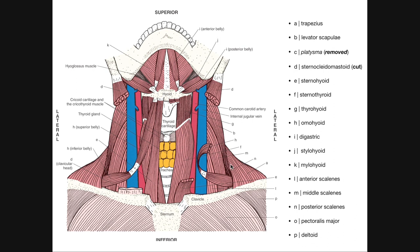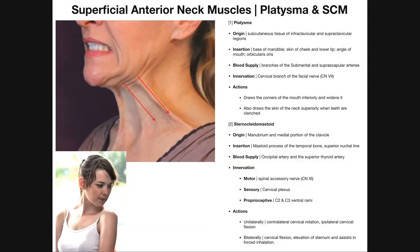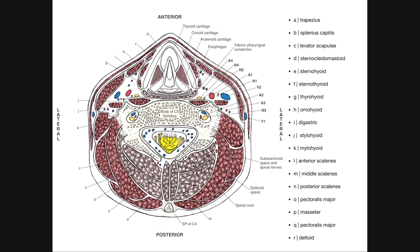Down here we have our scalenes: L is anterior scalene, M is middle scalene, N is posterior scalene — arranged from anterior to posterior, with levator scapulae and trapezius behind them. O is pectoralis major; P is the deltoid. Hopefully this video gave you a good understanding of the anterior neck muscles and the platysma and sternocleidomastoid as the superficial anterior neck muscles. In the next video we'll look at two more figures.